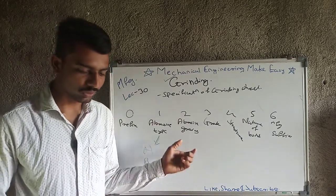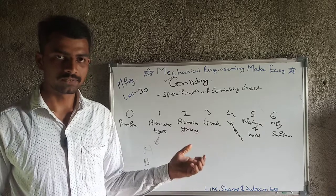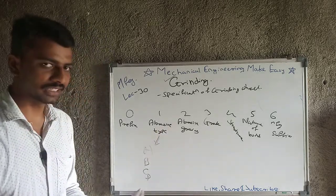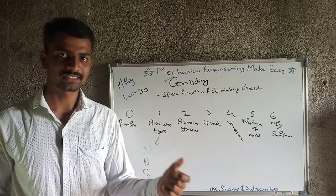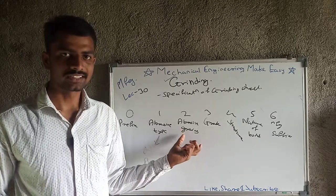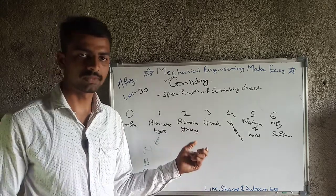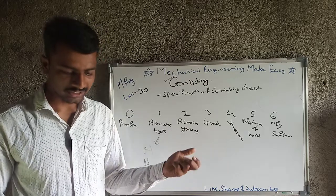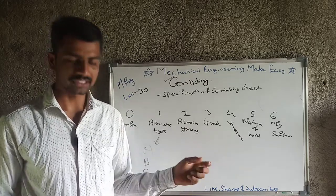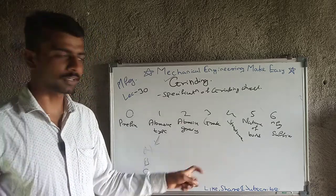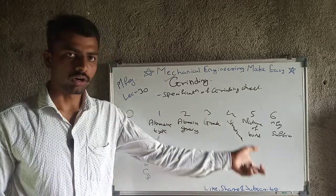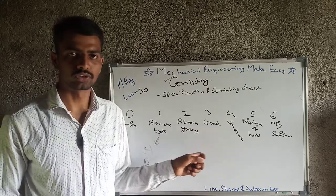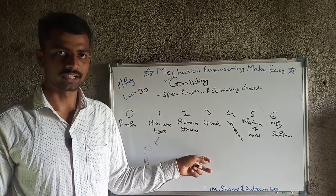Abrasive grain size is denoted numerically. A number from 10 to 24 means coarse grain size, 30 to 60 is medium, 80 to 180 is fine, and 220 to 600 is very fine. Note down all four ranges: 10–24, 30–60, 80–180, and 220–600.